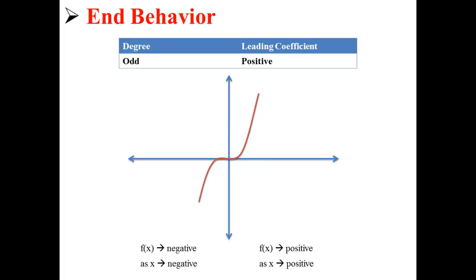If you have an odd degree and a positive leading coefficient, as x approaches negative infinity, f of x approaches negative infinity. And as x approaches positive infinity, f of x approaches positive infinity, as shown in the graph above.